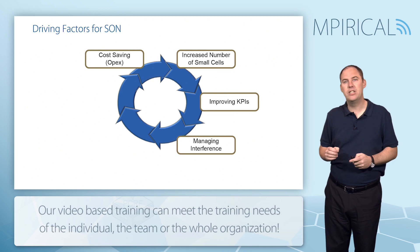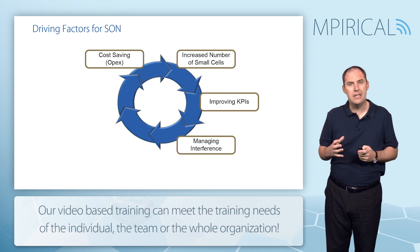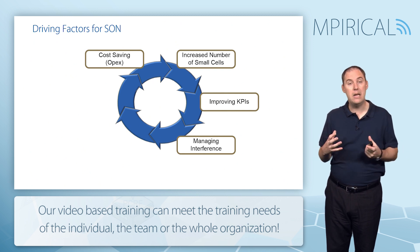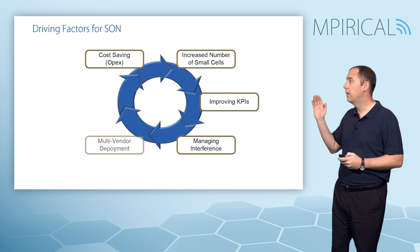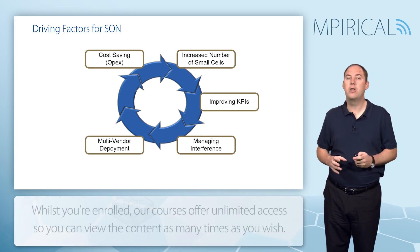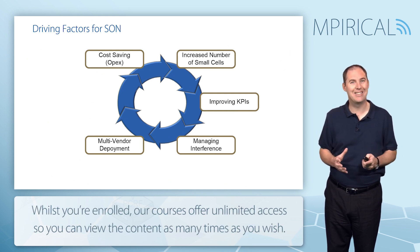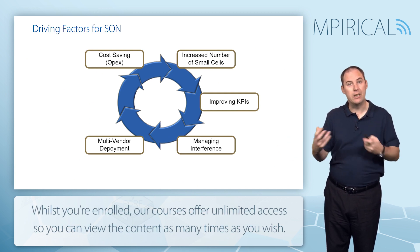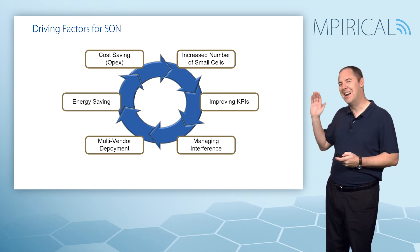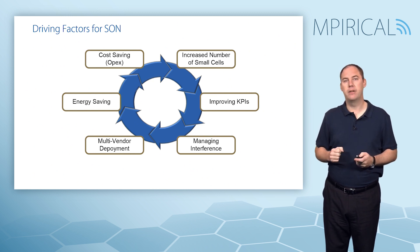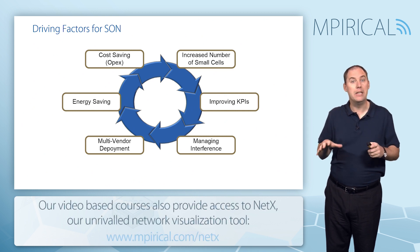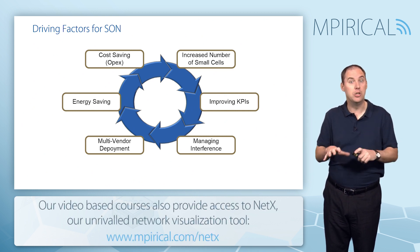SON manages interference — in LTE with cells on the same frequency, lots of interference occurs and schemes are needed to mitigate it. In multi-vendor deployments, SON provides a way to manage parameters and optimization across vendors. Finally, energy saving addresses the high cost of running the network by reducing that cost at certain times.